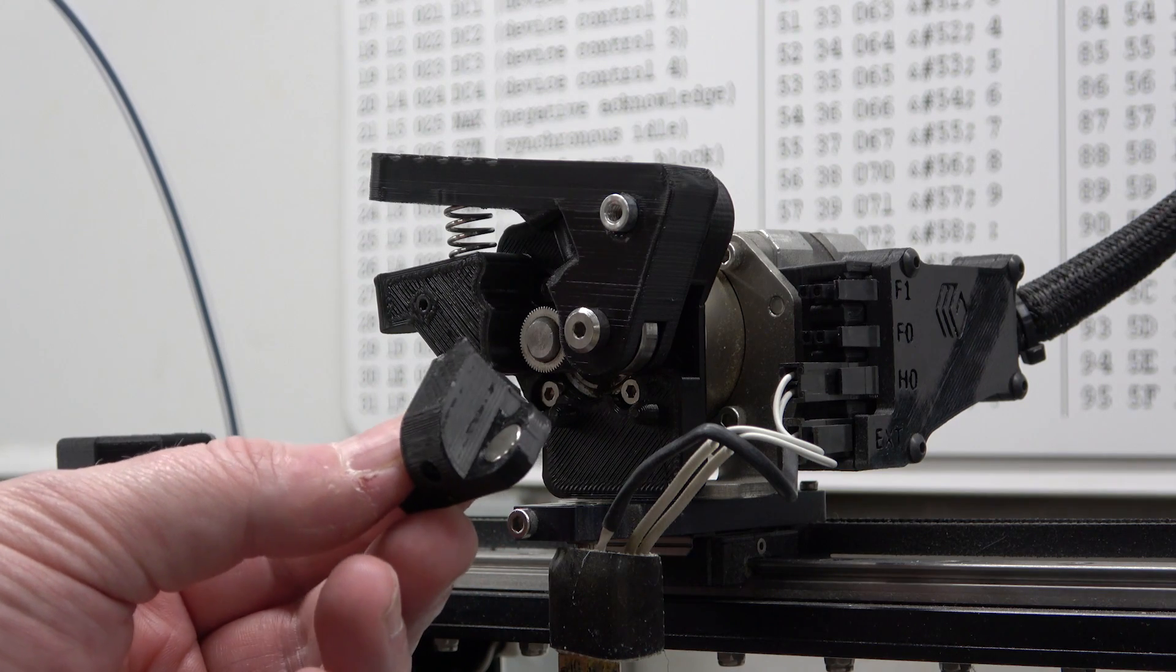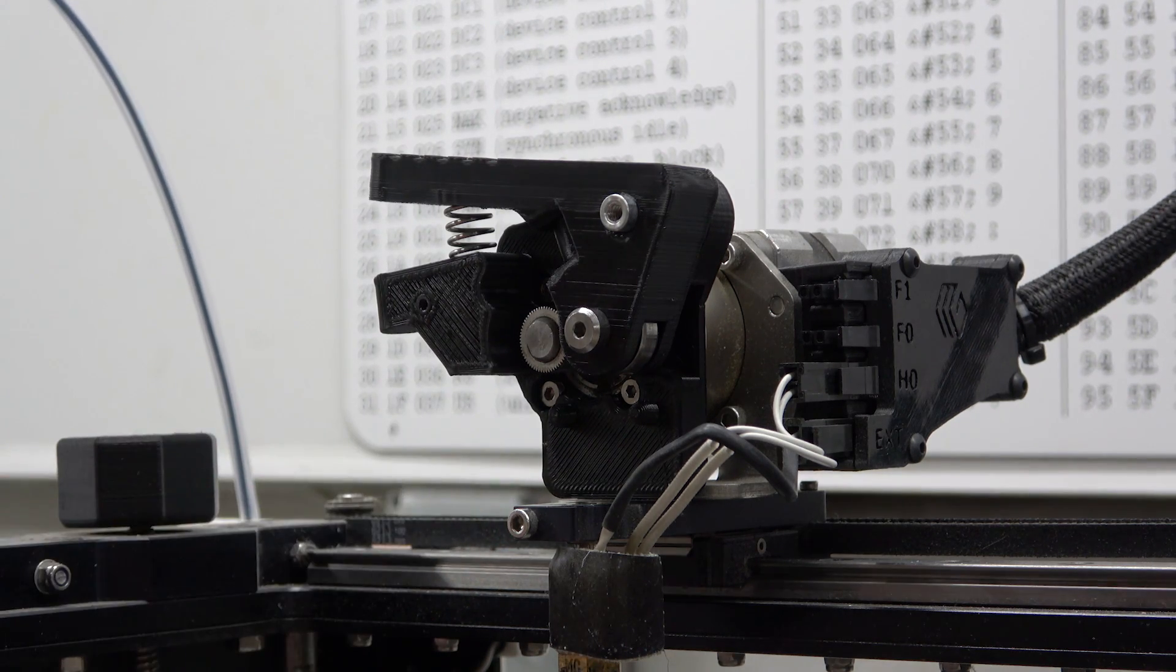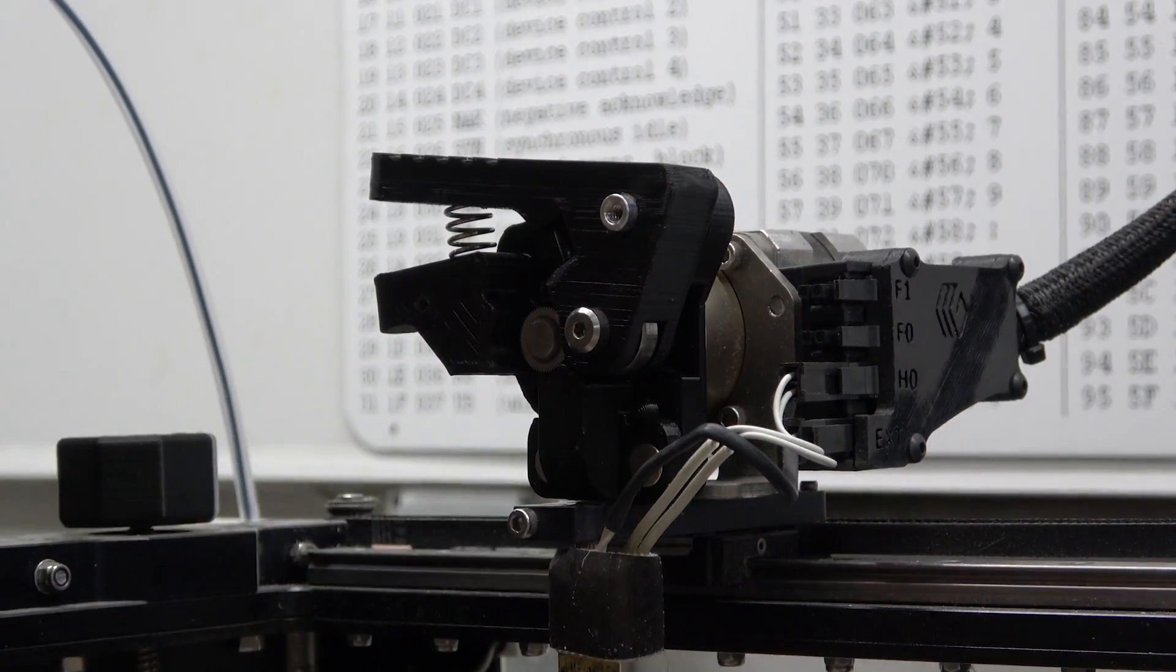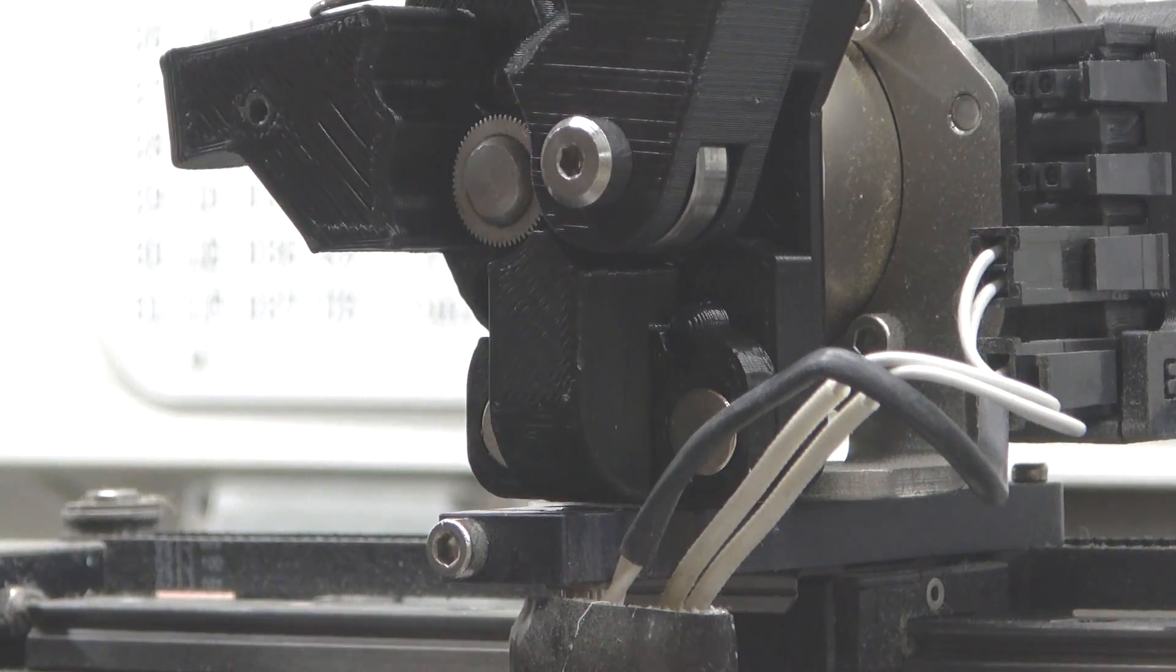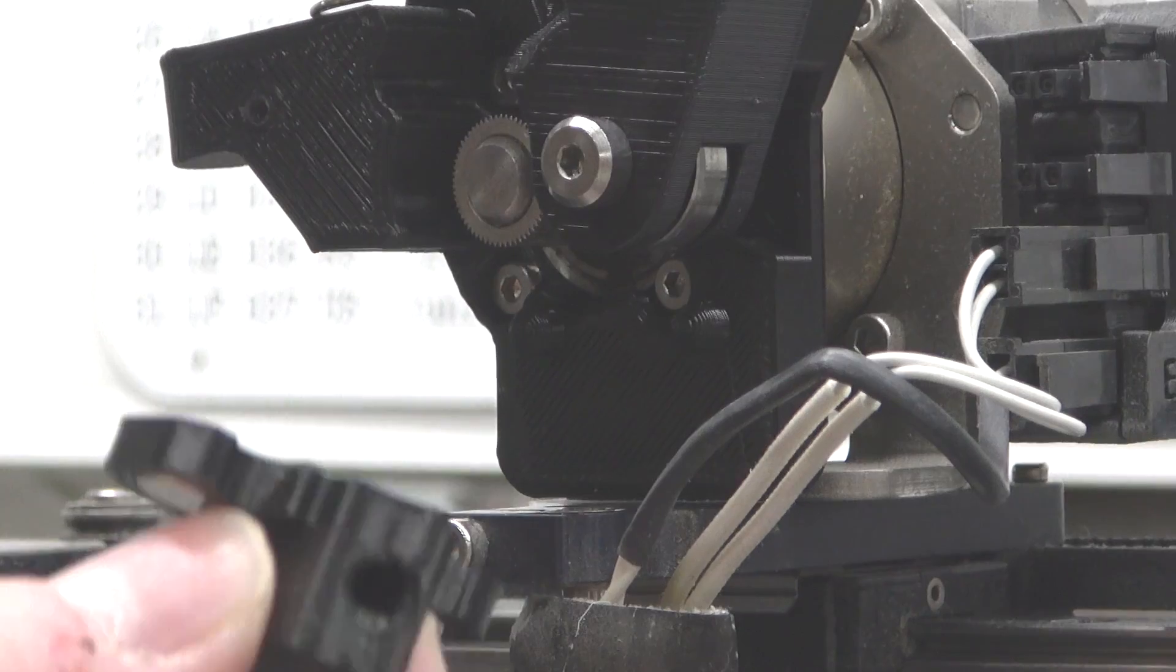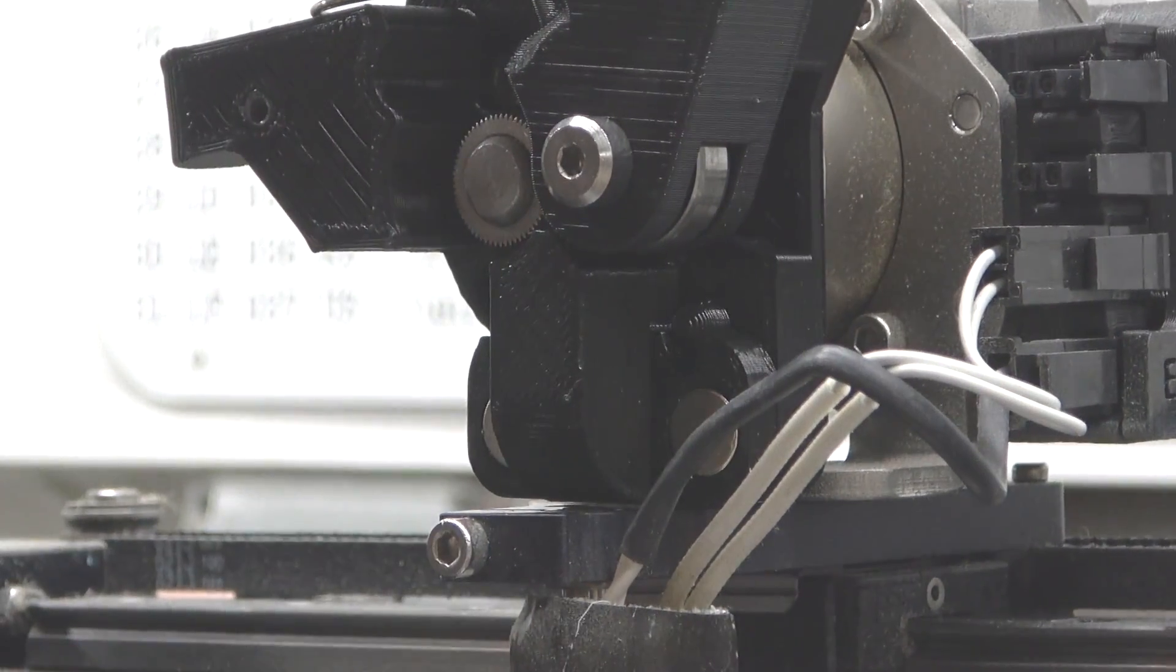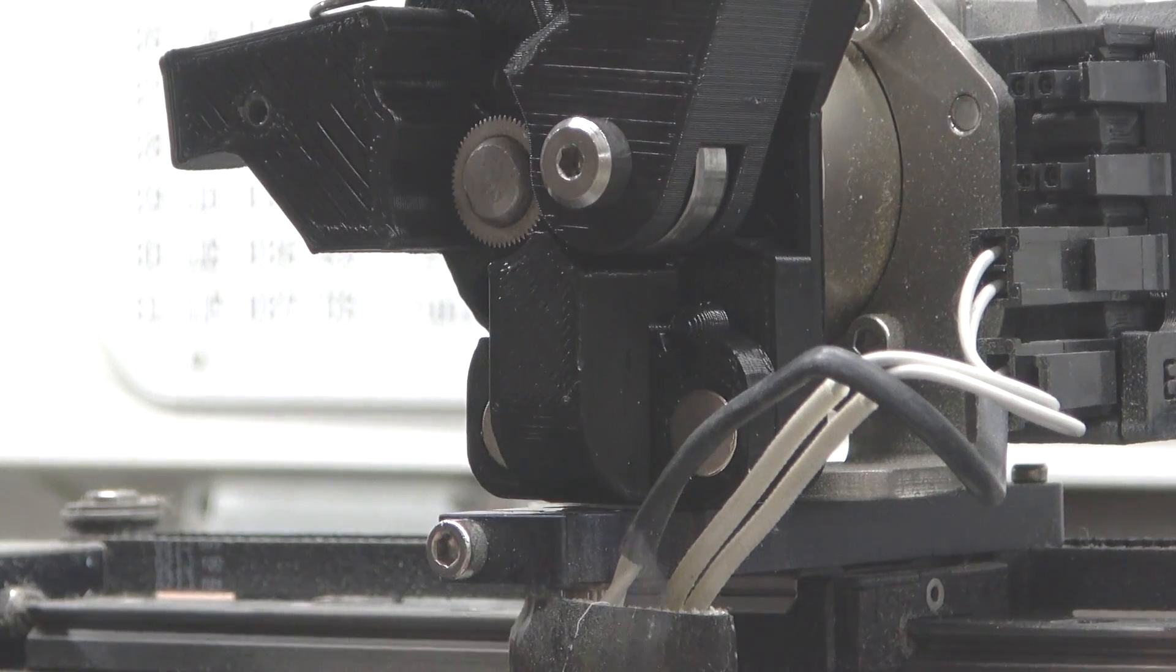Here's the filament guide. I put neodymium magnets in it as well so we should be able to just put that right in place. Nice! So if there is a jam pretty easy to pull out and clear the jam. Usually the jams occur when you're retracting the filament and you have like a molten blob on the end.